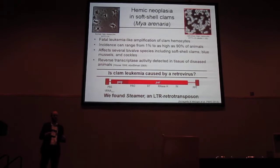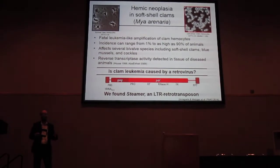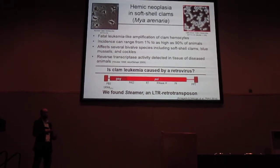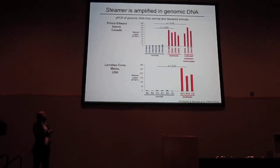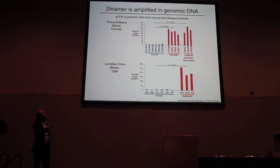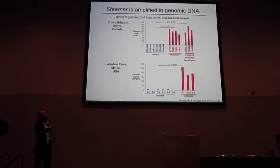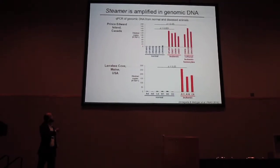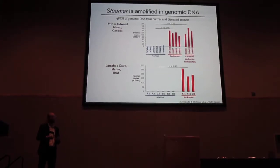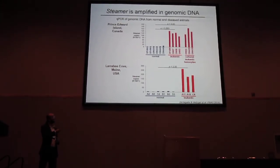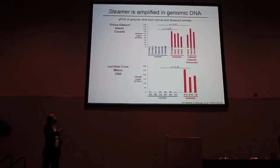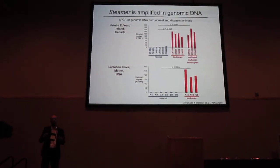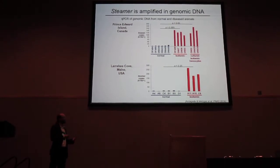We knew Steamer was highly expressed in these neoplastic cells, and we wanted to ask whether that expression was actually increasing the copy number of this transposon within cells. So we looked at copy number: on the y-axis we have RT as a single probe, normalized to EF1, which is a single copy gene. In normal animals you have about 2 to 10 copies of this element throughout the genome, but in samples from leukemic animals we see massive amplification — up to 100, some up to almost 300 copies per haploid genome — in two completely independent populations.